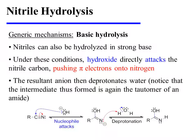Nitriles may also be hydrolyzed in strong base. Under these conditions, hydroxide directly attacks the nitrile carbon, thereby pushing pi-electrons onto nitrogen. The resultant anion then deprotonates water, and the intermediate thus formed is again the tautomer of an amide.